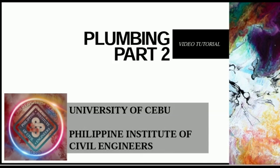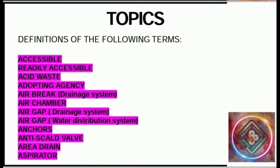Hello followers, this is Plumbing Part 2, another video tutorial brought to you by University of Cebu Philippine Institute of Civil Engineers. For our topics, we are going to define the following terms: accessible, readily accessible, acid waste, adopting agency, air brake drainage system, air chamber, air cap drainage system, air gap water distribution system, and anti-scald valve.